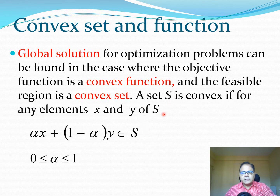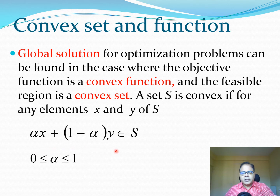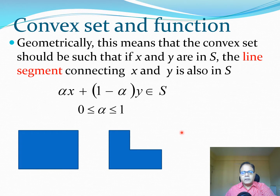A set S is convex if for any points X and Y within the set S, the following holds: a line between X and Y is also a part of S, where alpha is between 0 and 1. This means that the line segment connecting any two points X and Y is also inside the set S.